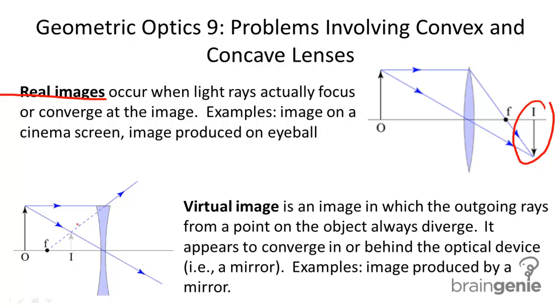For example, we see here we have our virtual image here. And we have these diverging rays which appear to converge on this virtual image. They don't actually converge and that's why it's virtual.